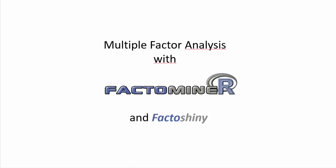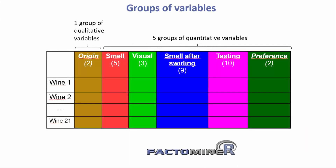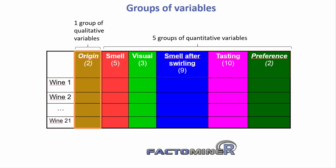We are going to use the following dataset in which 21 wines were described by a panel of experts using sensory descriptors. Two qualitative variables, the origin of the wines and the soil type, were also recorded. We have therefore 21 rows of wines and 31 columns of variables: two qualitative and 29 quantitative, which can be grouped into five groups of variables.